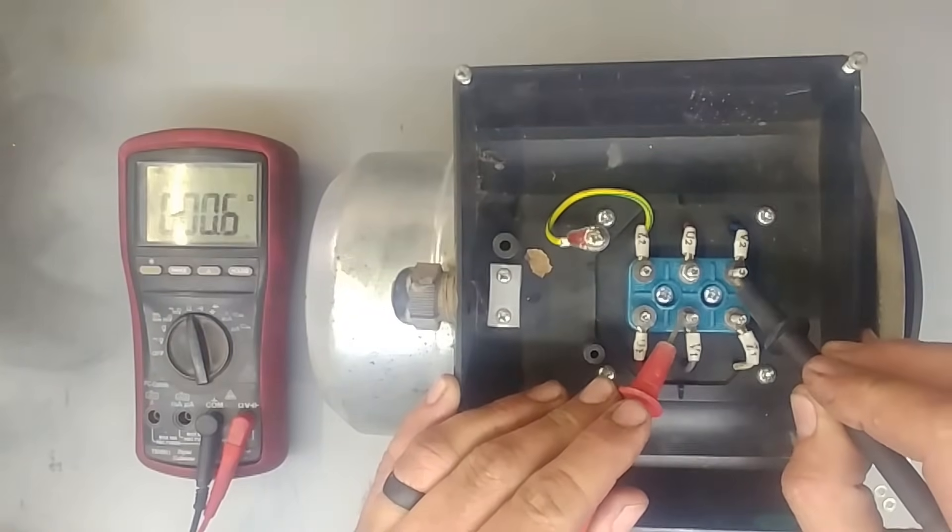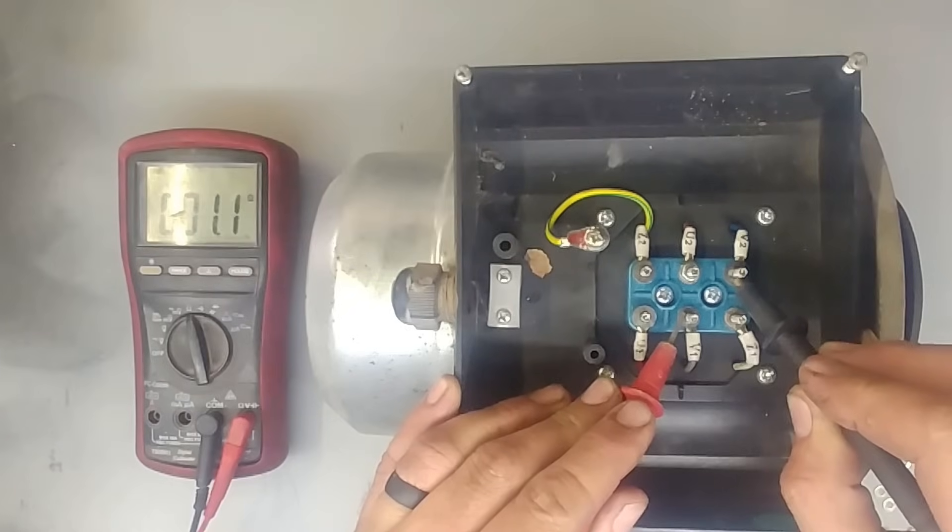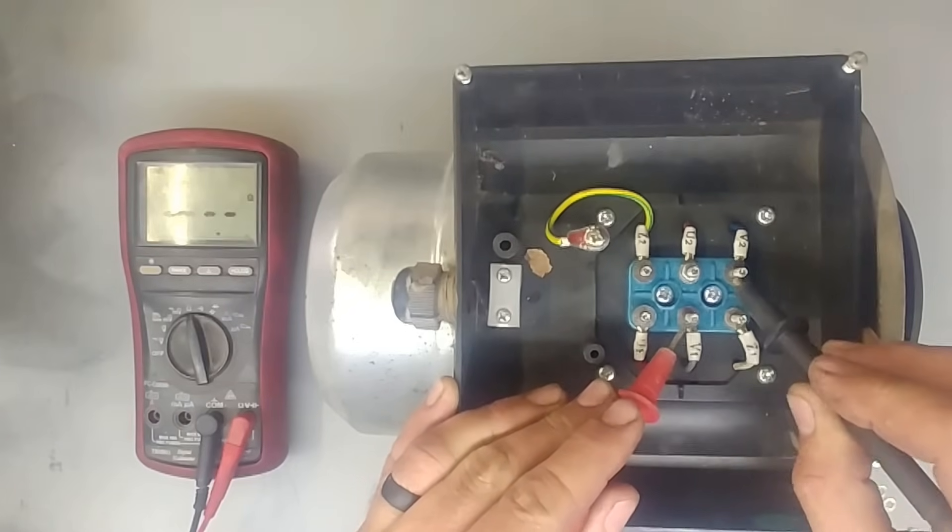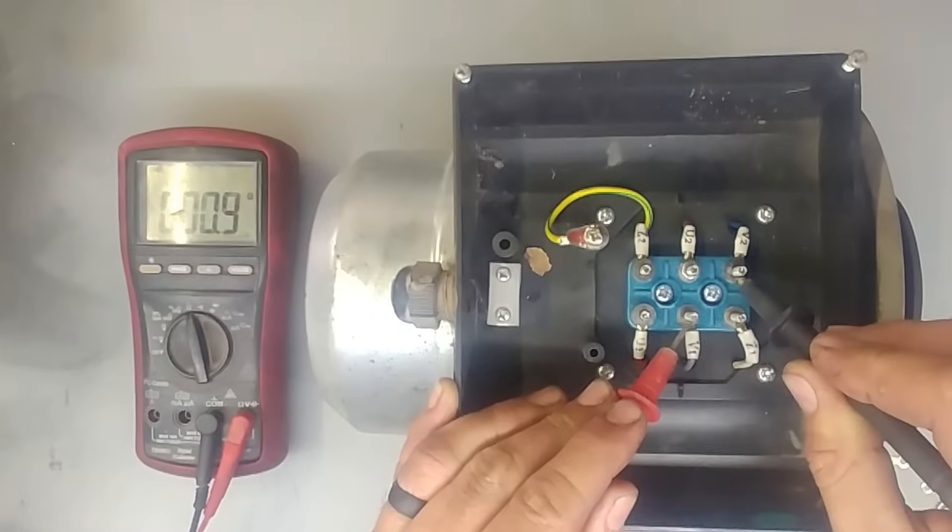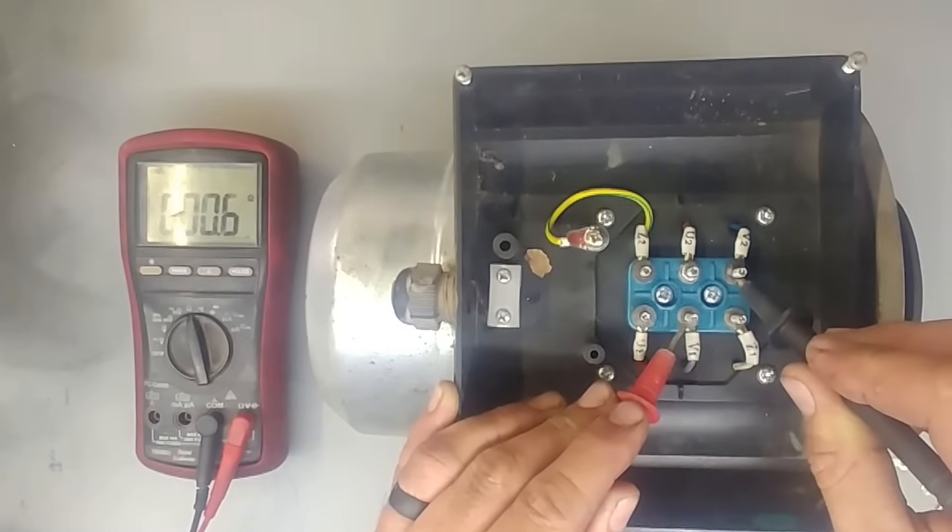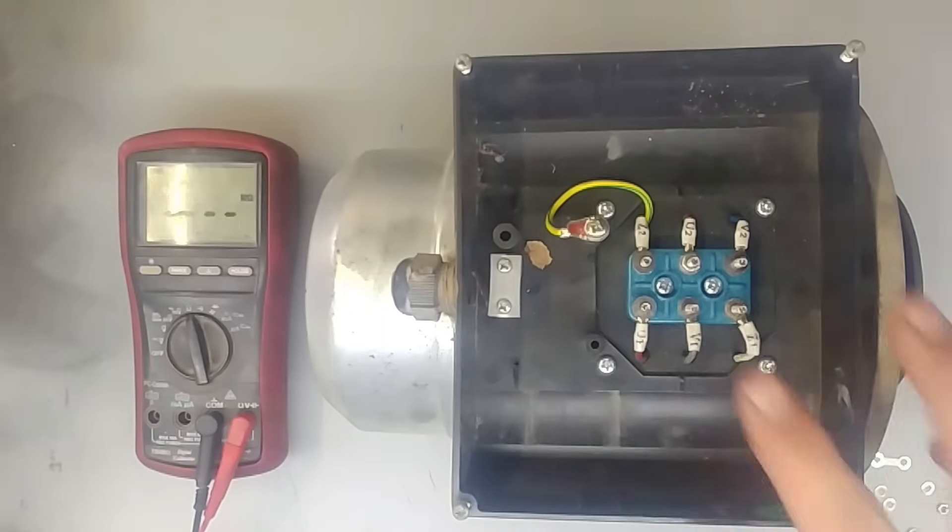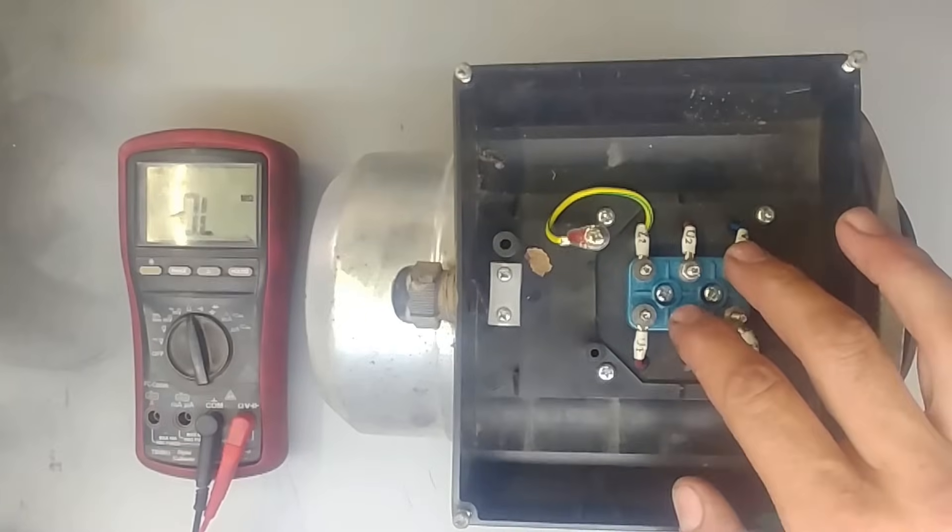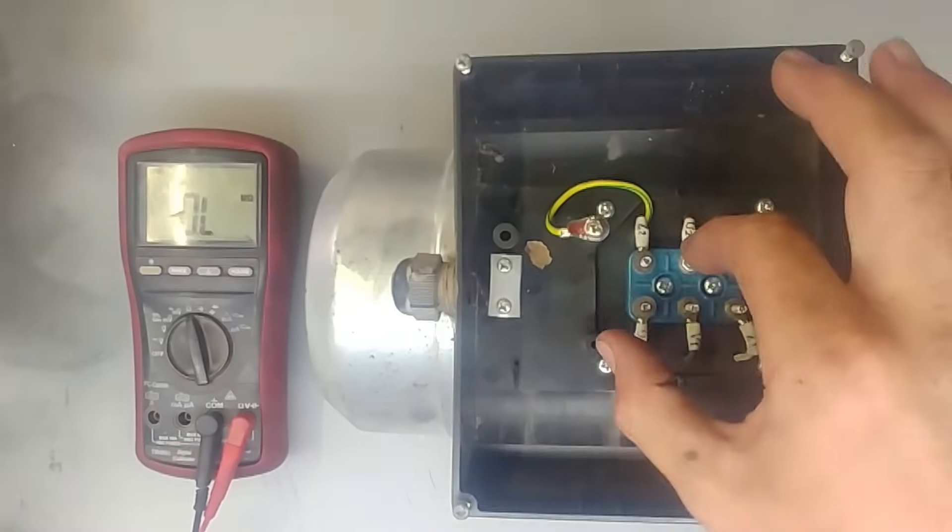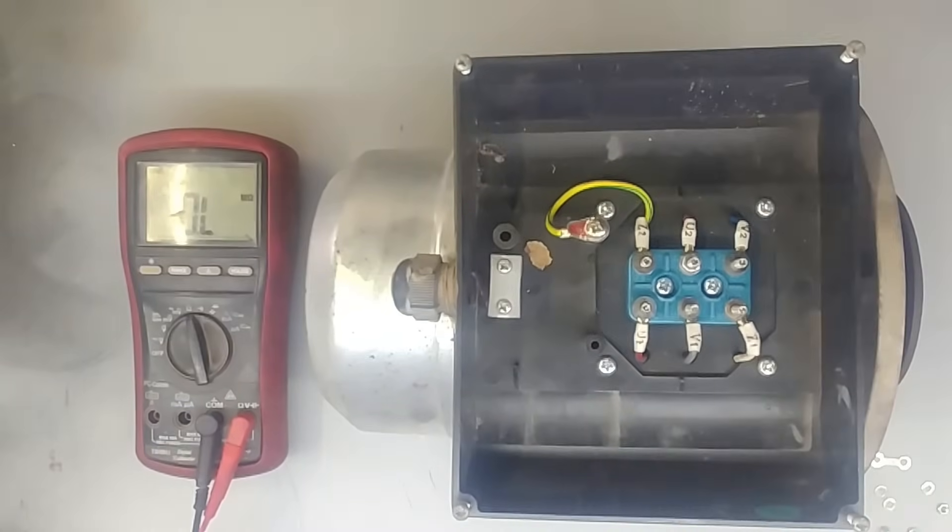Then this should be my centrifugal switch which gives me a reading close to zero ohms, depending on how good the contacts are. Yeah, that's close enough. That's just resistance inside the wires. Okay, so now I know this is my centrifugal switch, my starting and my running coil. Now let me show you how to connect this.